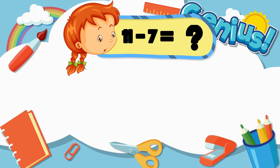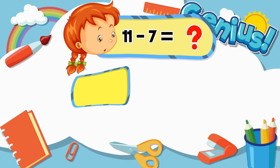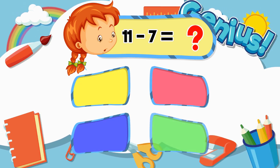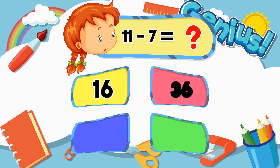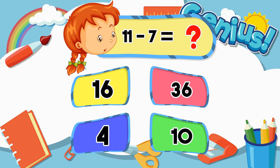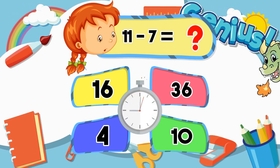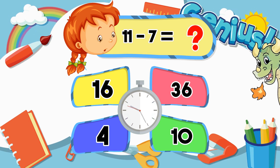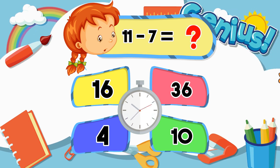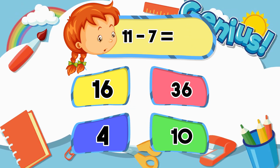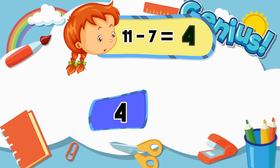What is 11 minus 7? Options: 16, 4, 10. Answer: 4.